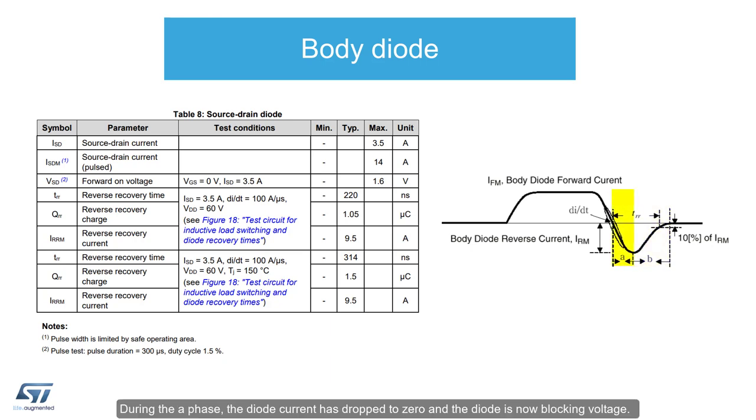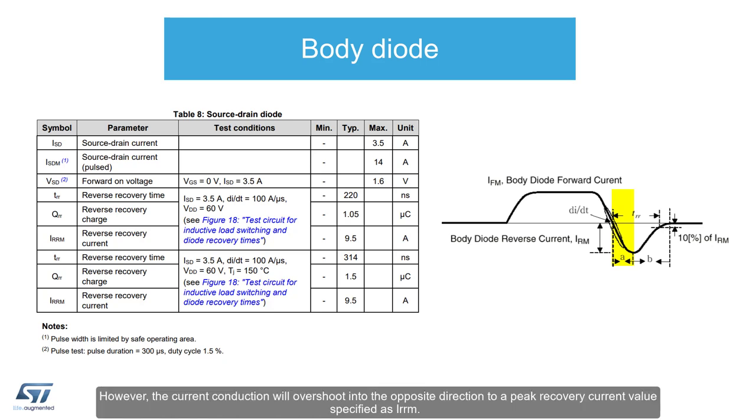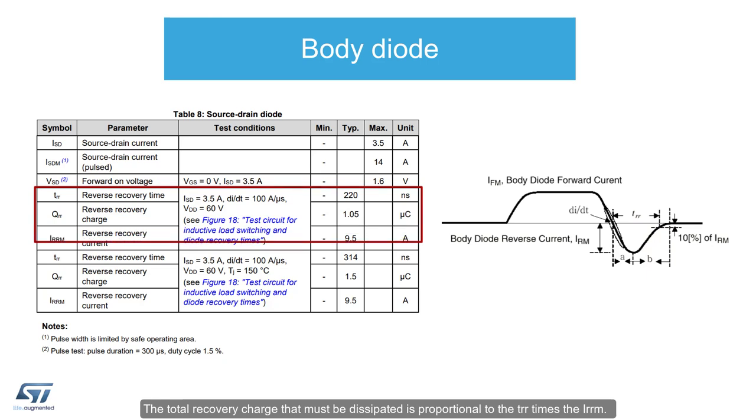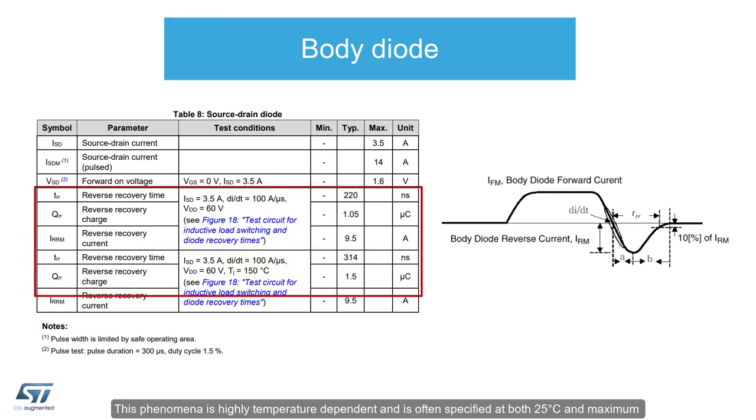During the A phase, the diode current has dropped to zero and the diode is now blocking voltage. However, the current conduction will overshoot into the opposite direction to a peak recovery current value specified as IRRM. The current then begins to fall in value back to zero during phase B. The cumulative time it takes for this recovery is specified as the TRR. The total recovery charge that must be dissipated is proportional to the TRR times the IRRM. This phenomena is highly temperature dependent and is often specified at both 25 degrees C and maximum operating junction temperature.